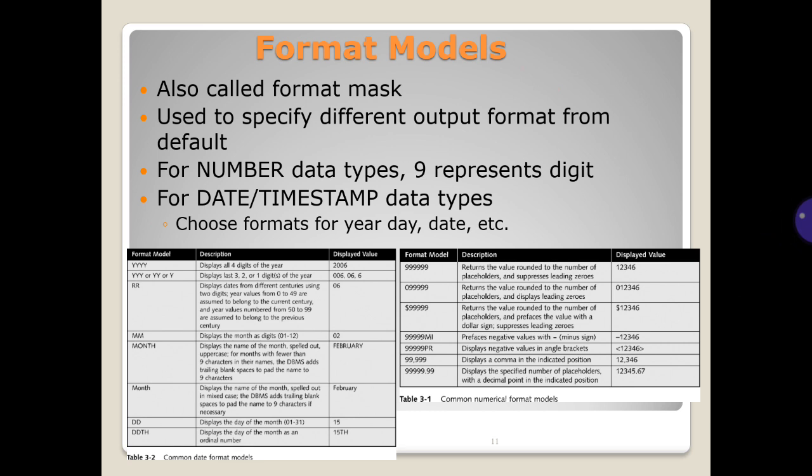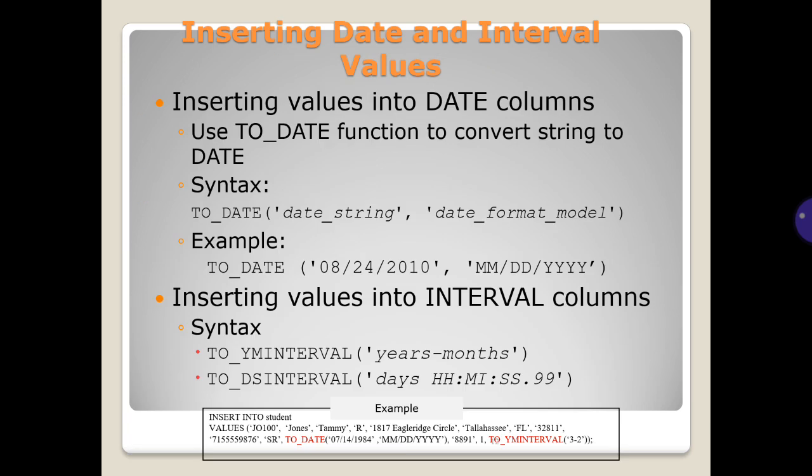Format models, also called format masks, are used to specify different output formats from default. For number data types, nine represents digit. For date or timestamp data types, there are format codes for year, month, day, etc. Inserting date and interval values: inserting values into date columns and inserting values into interval columns.